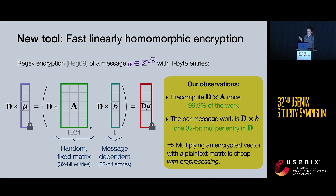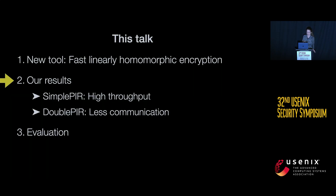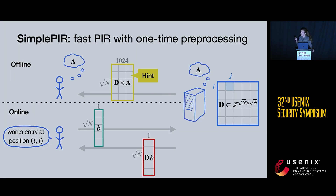So with some preprocessing, multiplying an encrypted vector by a plaintext matrix can be very cheap — almost as cheap as doing the same computation without any encryption at all. We can compose these two building blocks: the classic PIR scheme and fast linearly homomorphic encryption with preprocessing, giving us a fast PIR scheme with a one-time preprocessing step, which we call SimplePIR.